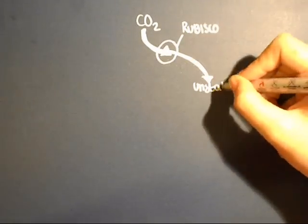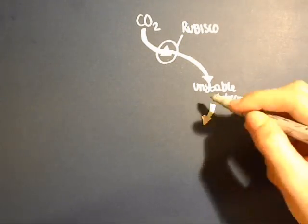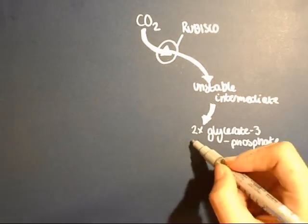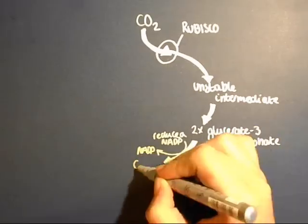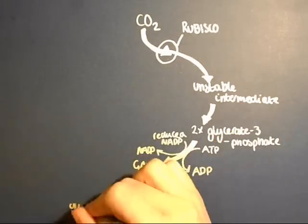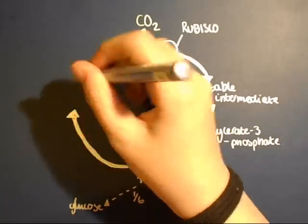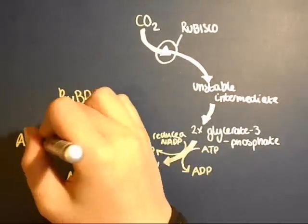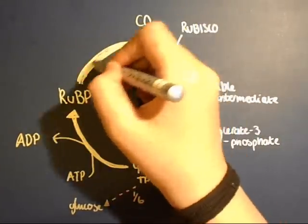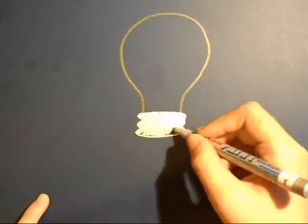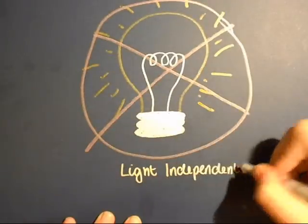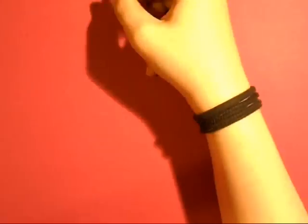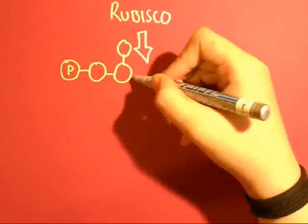Whoa, the Calvin cycle! Whoa, the Calvin cycle! Whoa, the Calvin cycle — light independent photosynthesis. Put Rubisco in,